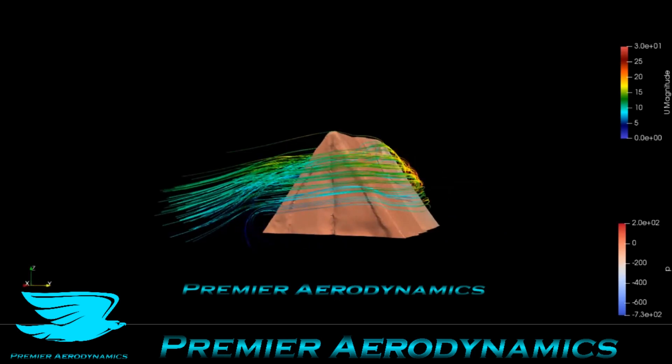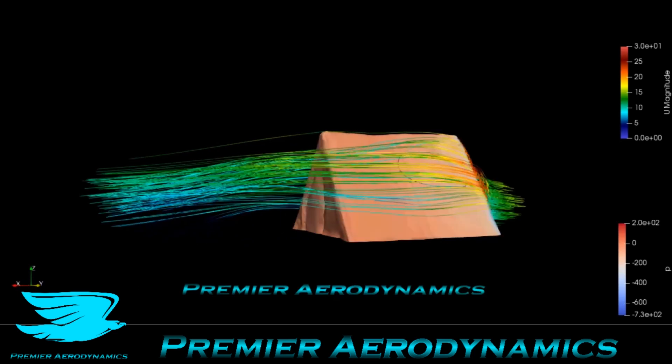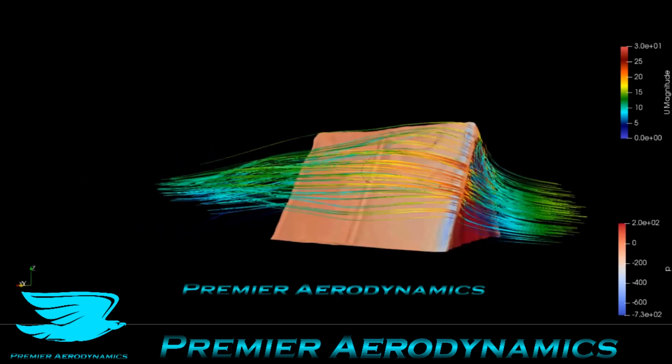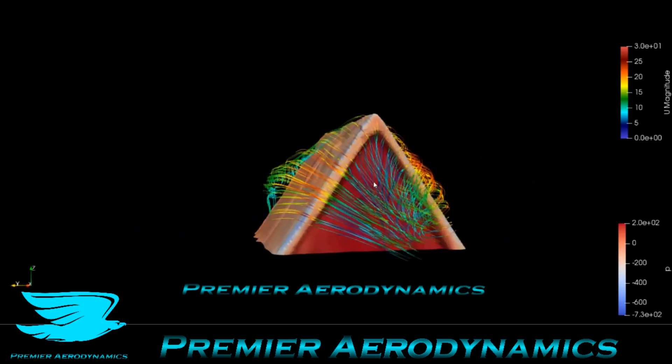And you can see on this side as well, actually, there are some streamlines that are recirculating in that juicy middle section. And then all these streamlines are hitting the front and they have to go over. So that's why we get a huge pressure at the front of this tent.